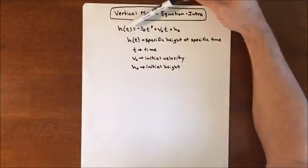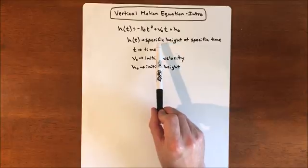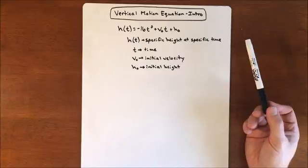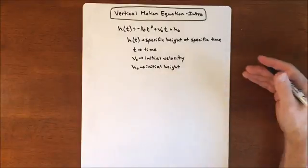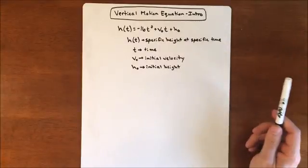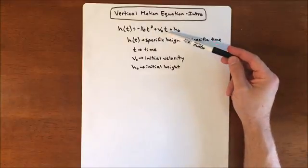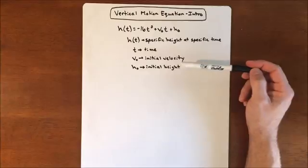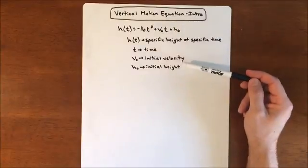So the pieces of the equation: H of T represents a specific height at a specific time. They may ask where the object is after 3 seconds, or how long it takes to reach 5 feet, 10 feet, 100 feet, or whatever the situation is. T in the equation is always time. V with a subscript of 0 is your initial velocity.